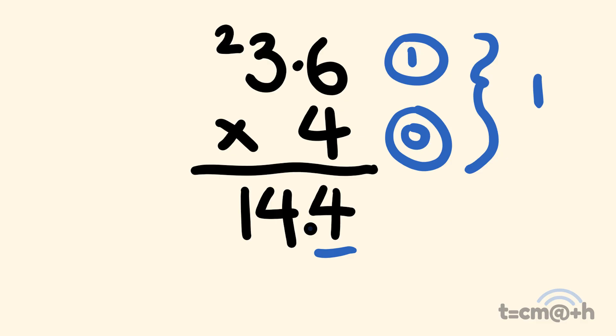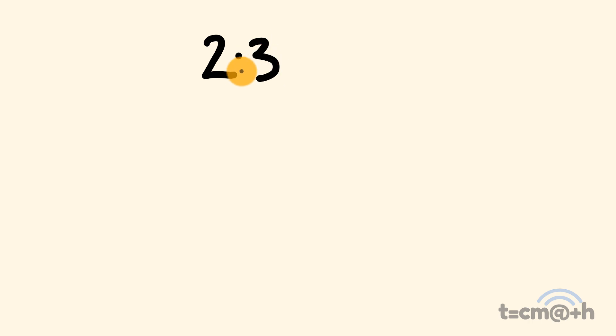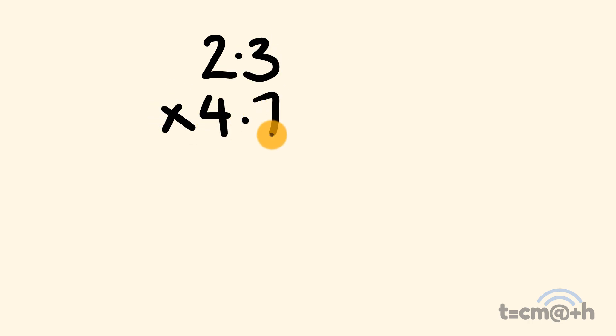Let's go through another example: 2.3 multiplied by 4.7. We're going to treat this like 23 multiplied by 47 and then deal with the decimals afterwards.